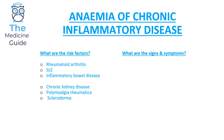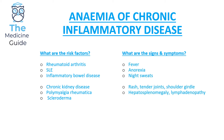Signs and symptoms include fever, anorexia, and night sweats. More specific symptoms relating to autoimmune conditions include rash, tender joints, and shoulder girdle pain. Other symptoms such as hepatosplenomegaly and lymphadenopathy may be present in those suffering from chronic conditions.